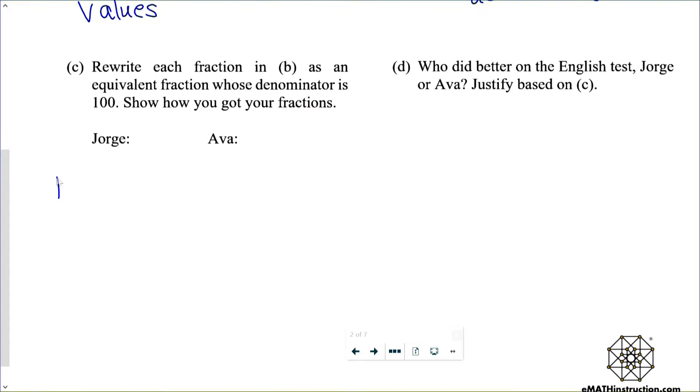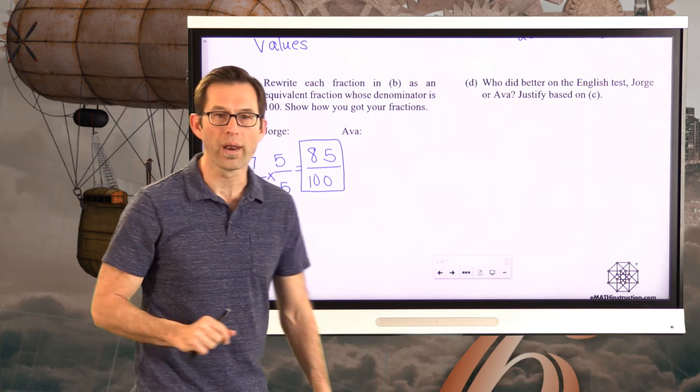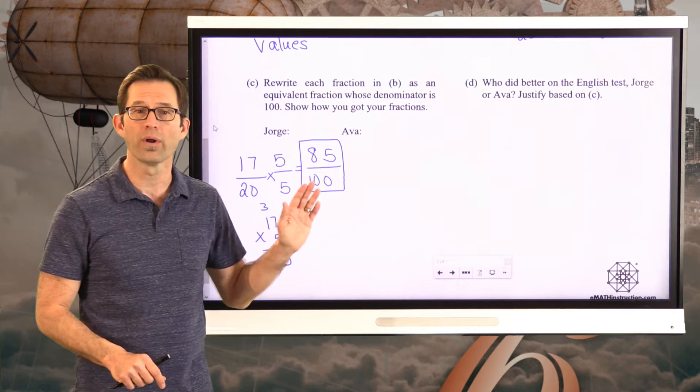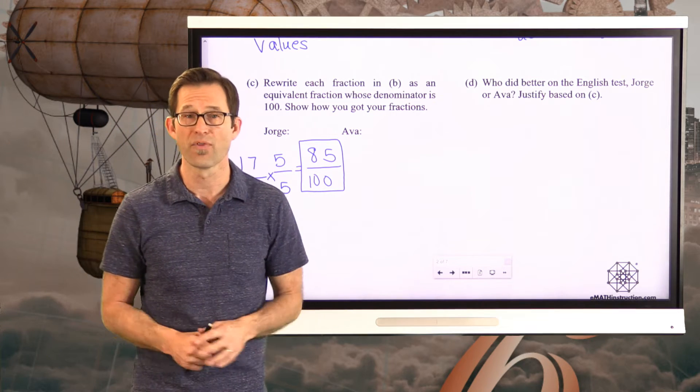Rewrite each fraction in B as an equivalent fraction whose denominator is 100. Show how you got your fractions. Now we wouldn't necessarily have to go with a common denominator of 100, but 100's kind of nice. We can kind of picture the number 100 in our heads. It's a nice number to just work with. So let's get both of these fractions to have denominators of 100. For Jorge, we've got 17/20. To get a denominator of 100, we would have to multiply the numerator and the denominator by 5. So 20 times 5 is 100, and 17 times 5 is 85. So for Jorge, getting a 17 out of 20 is sort of the equivalent of getting an 85 out of 100.